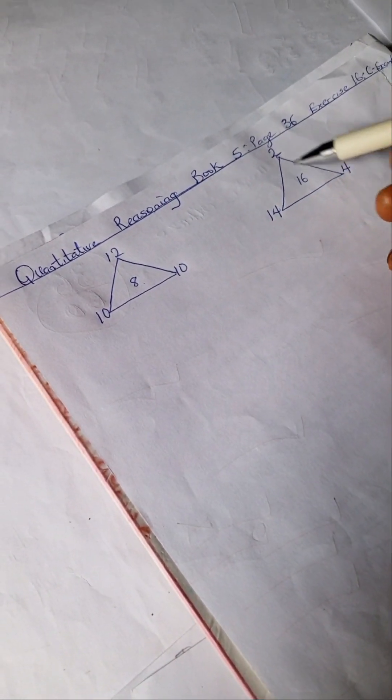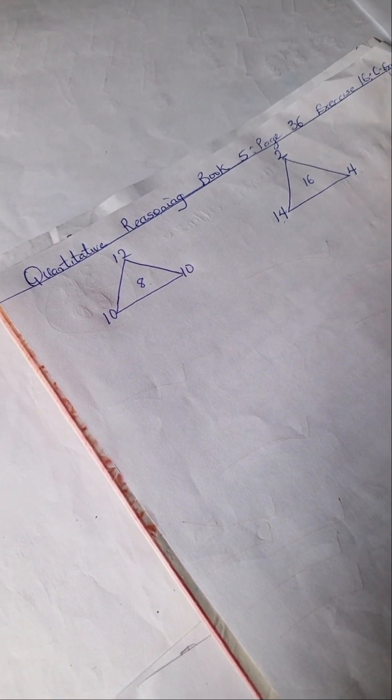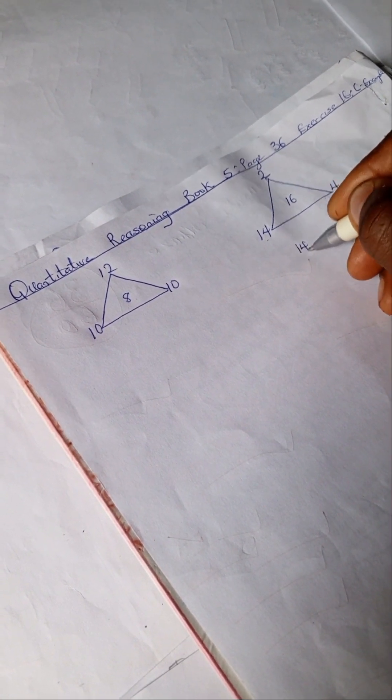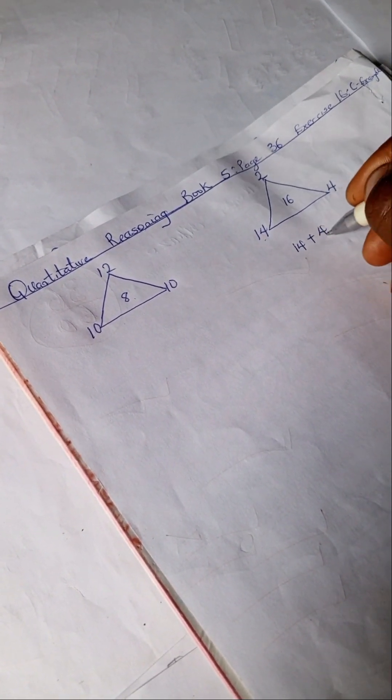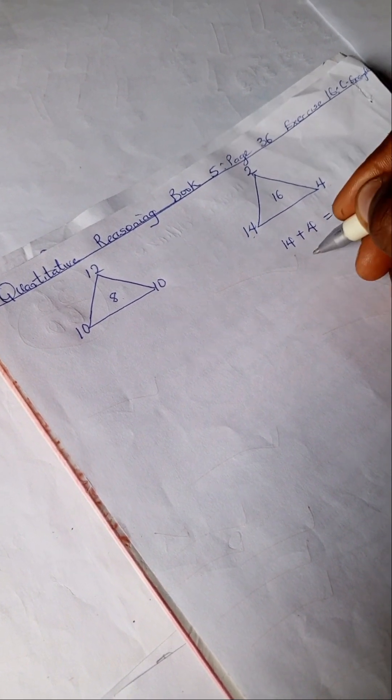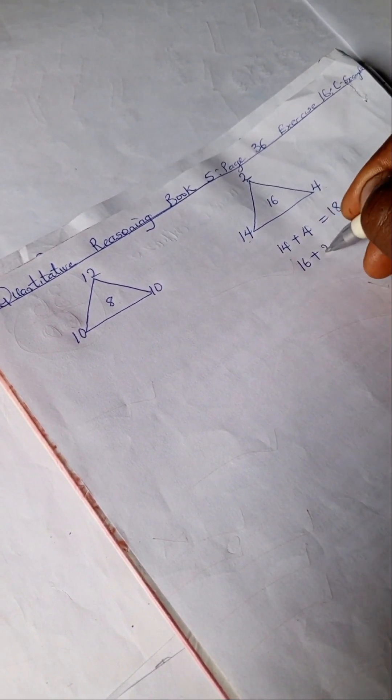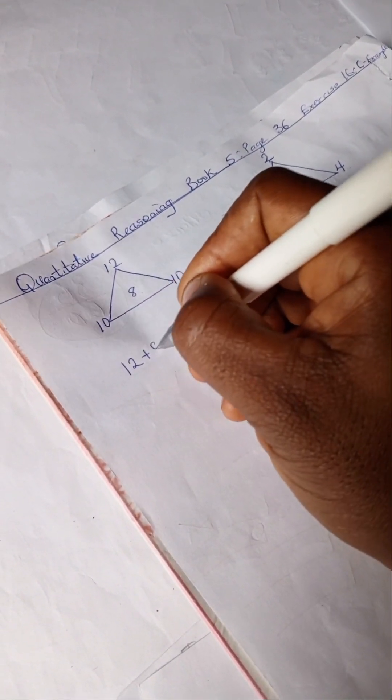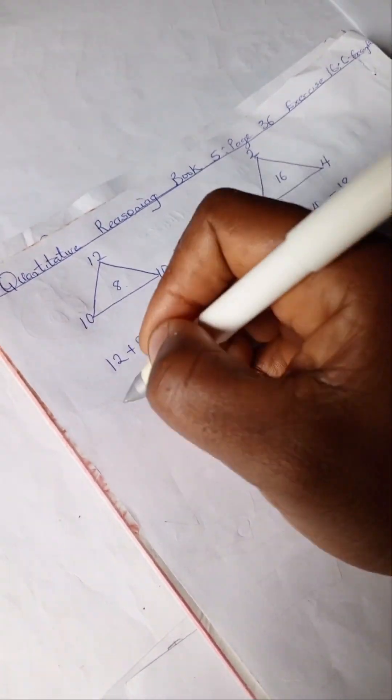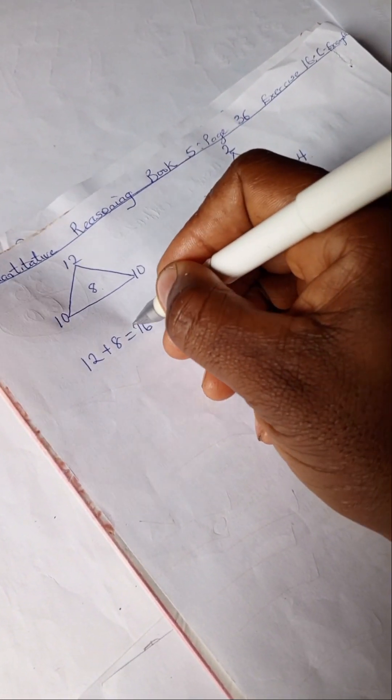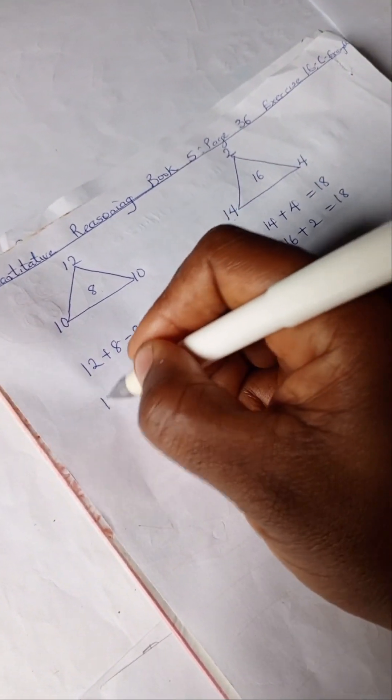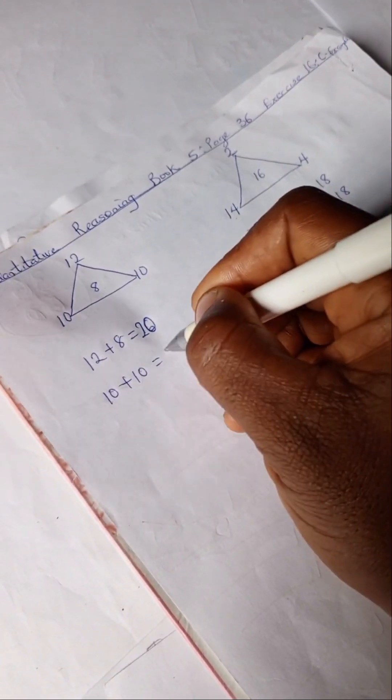If you consider this, 2 plus 16 is 18, 14 plus 4 is 18. So we have our 14 plus 4 equals 18 and our 16 plus 2 equals 18 and here we have our 12 plus 8 equals 20 and our 10 plus 10 equals 20.